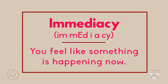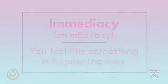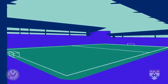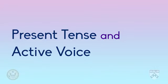When a broadcaster presents the news, they want to communicate immediacy to the audience. Immediacy means you feel like something is happening now. For example, a broadcaster wants the viewers to feel like they are experiencing a major sports event as it happens. The broadcaster wants the person watching the news to feel part of the story. The main ways to do this are to use present tense and active voice.